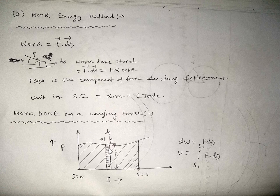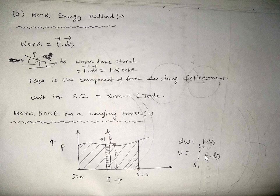The work done for this small zone is represented as dW. By integrating this expression with the limits from initial displacement to final displacement, and substituting the known relationship between F and s, we can integrate the equation to find the total work done stored in the body.